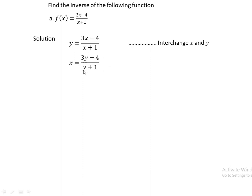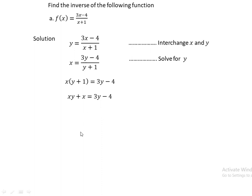To solve for y, multiply both sides by (y + 1). This gives x(y + 1) = 3y - 4, which expands to xy + x = 3y - 4. Then collect like terms on one side: xy - 3y = -x - 4.